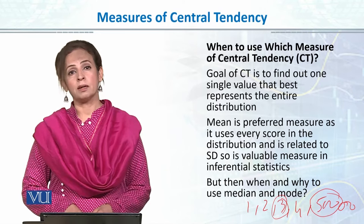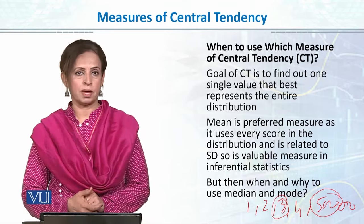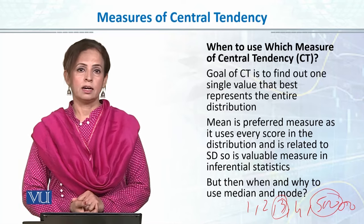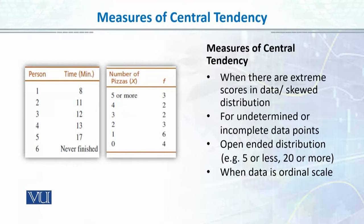Mean is our preferred choice mostly when we report central value, and in our daily life we also talk in terms of averages. But we will also use median and mode. Median is mostly used when there are extreme values in the data. Secondly, when we have undetermined and incomplete data points — being a psychology student, there are many such situations.